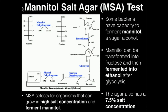Mannitol salt agar is going to contain two things. Number one, obviously in the name, it's going to contain mannitol. Mannitol is a sugar alcohol. It's similar in some ways to glucose — it's a six-carbon sugar except for the fact that it's an alcohol. It's a little bit different, although it can be converted into things similar to glucose, which we'll see in a minute.